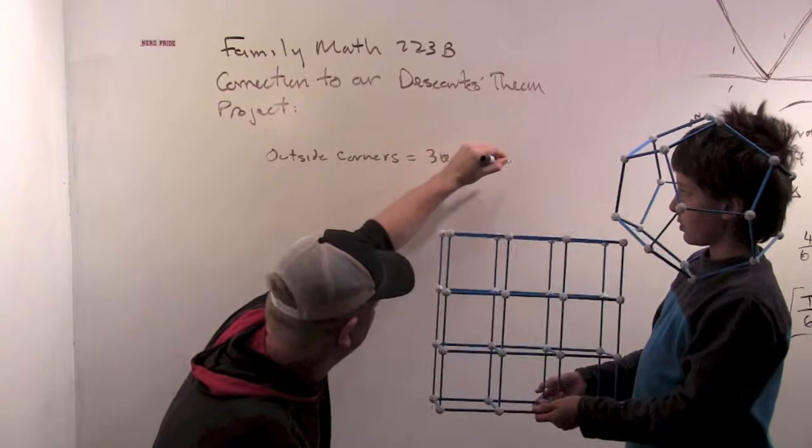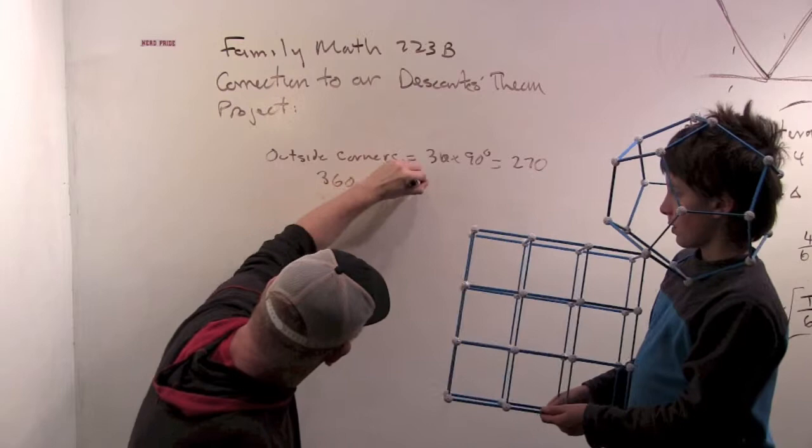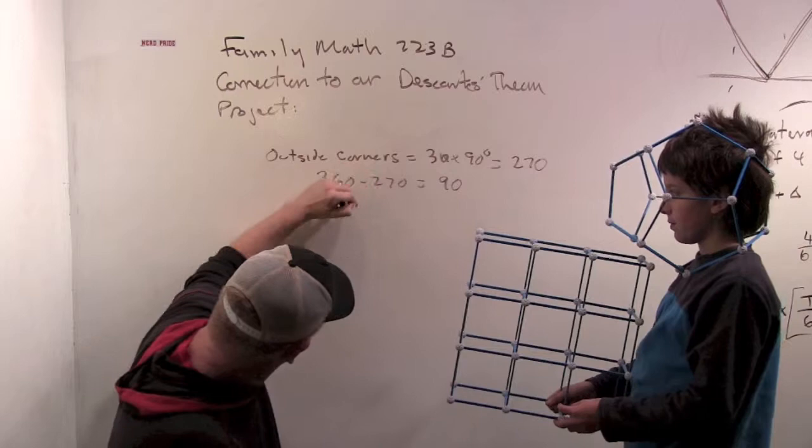360 minus 270. That's going to be... That's 90. Ninety. Eight times 90. That's 720. 720.